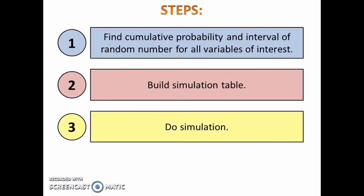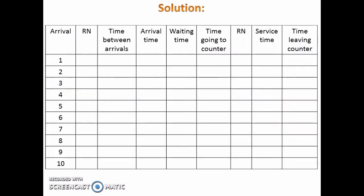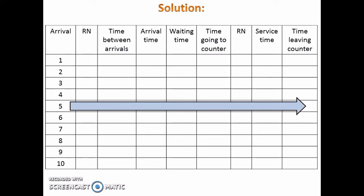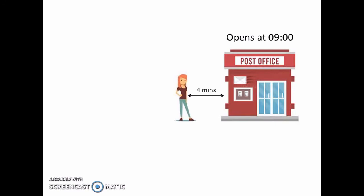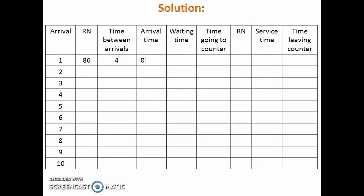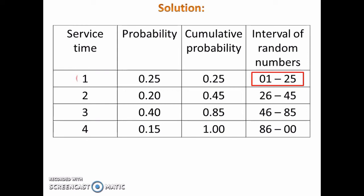After the simulation table is built, do the simulation. The simulation must be done from left to right. For the first person, random number for time between arrivals is 86. 86 lies in this interval, thus time between arrivals for the first person is 4 minutes. This means that the first person arrived 4 minutes after the post office opens, that is, she arrived at 9:04. Since she is the first person to arrive, she does not have to wait, so the waiting time is 0. She will straight away go to the counter at 9:04. Random number for service time is 09. 09 lies in this interval, thus service time for the first person is 1 minute.